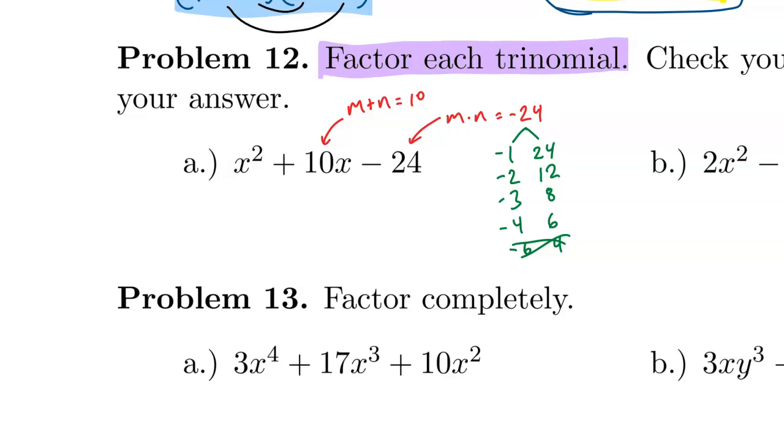You probably already noticed that in this list, negative 2 and 12 is the pair that adds to positive 10. So my factorization is (x - 2) times (x + 12).